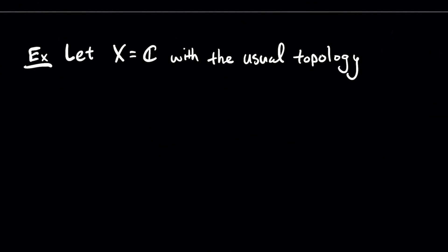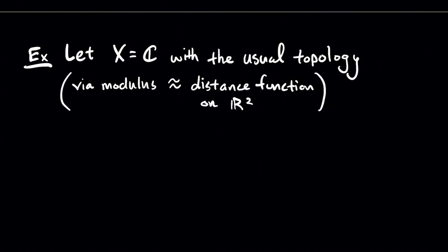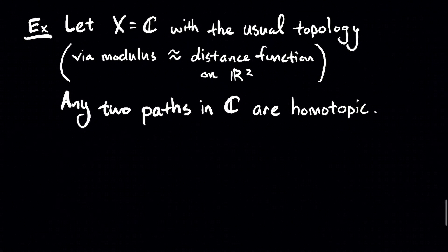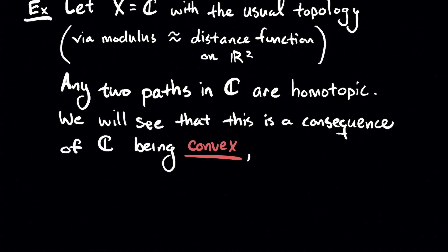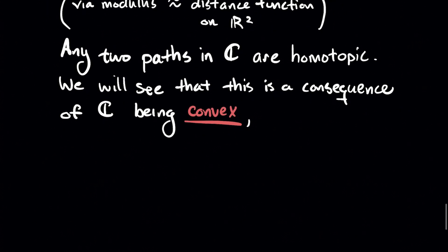So let's let X be the complex numbers and we'll give it the usual topology. In case you're not super familiar with that, I'm using the modulus, which you can think of as like the distance function on R2 on the plane. Now any two paths in the complex plane are homotopic, I claim.